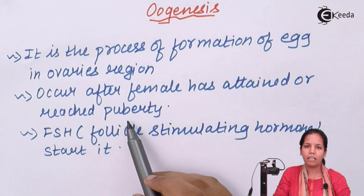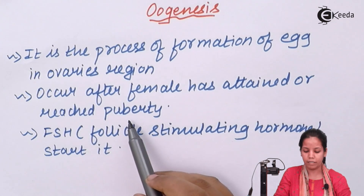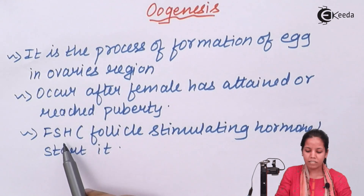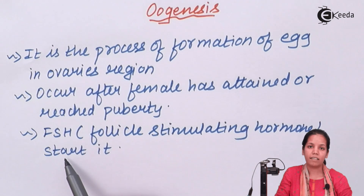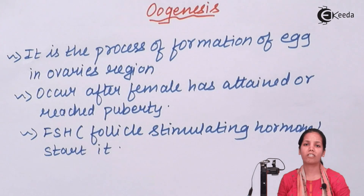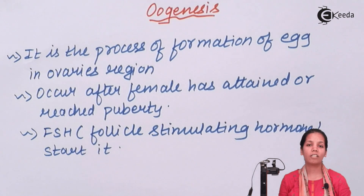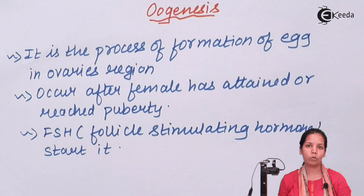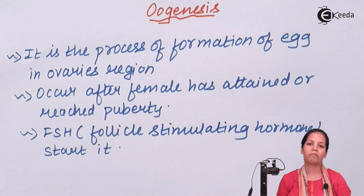16 to 18 years is the phase for oogenesis or puberty. FSH, which is the follicle stimulating hormone, triggers this process. Various hormones like progesterone and estrogen are also involved, and the menstrual cycle is attained. There is also bleeding involved if the female gamete is not fertilized.